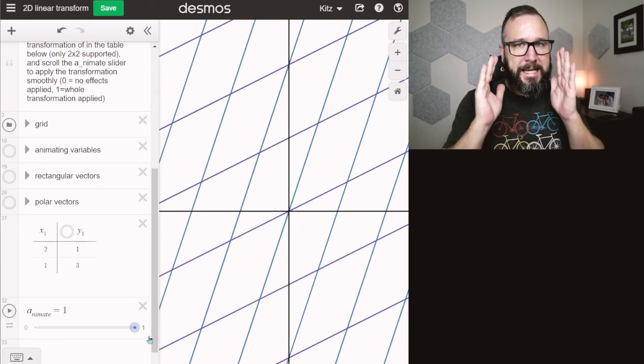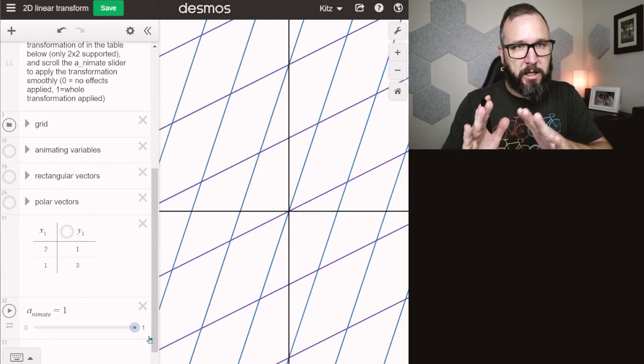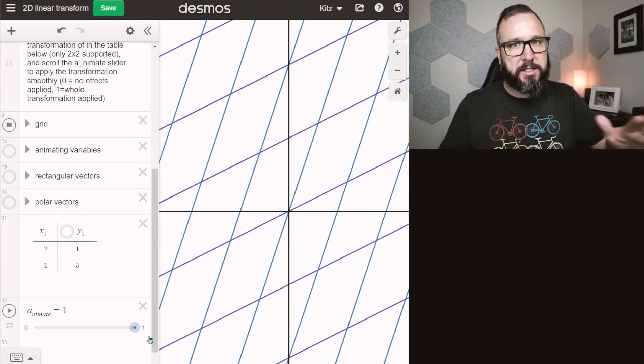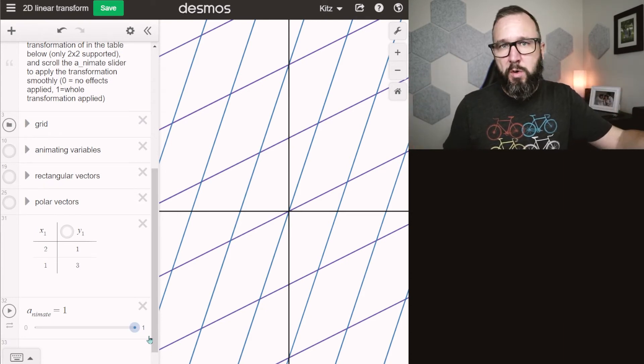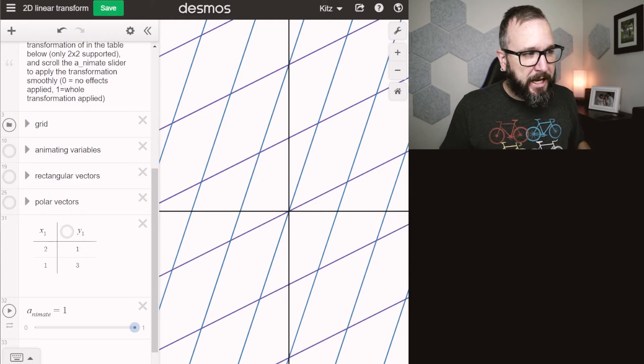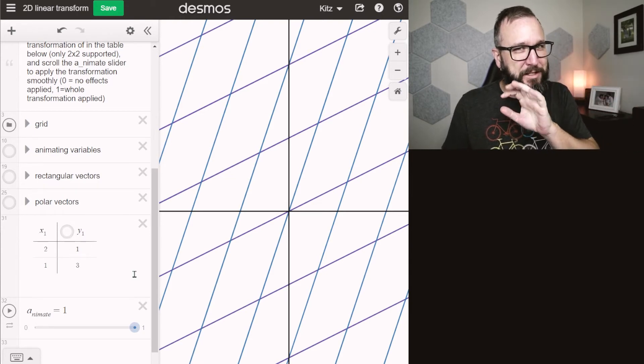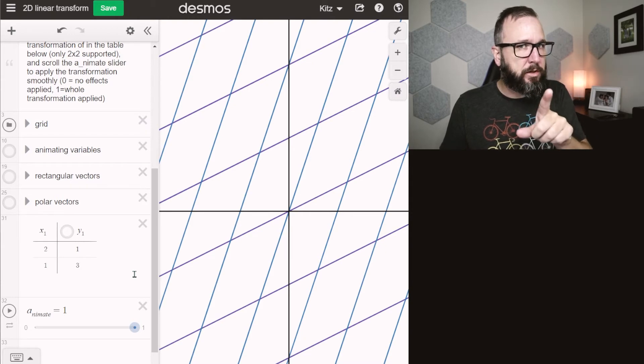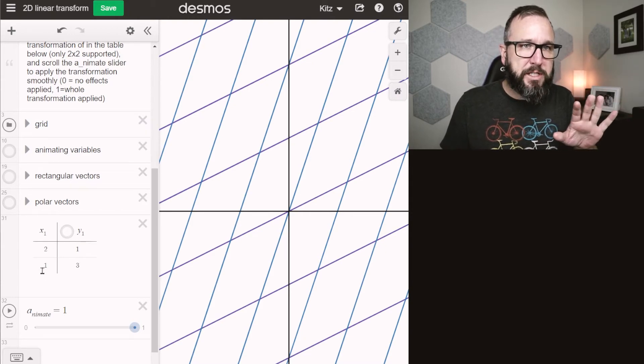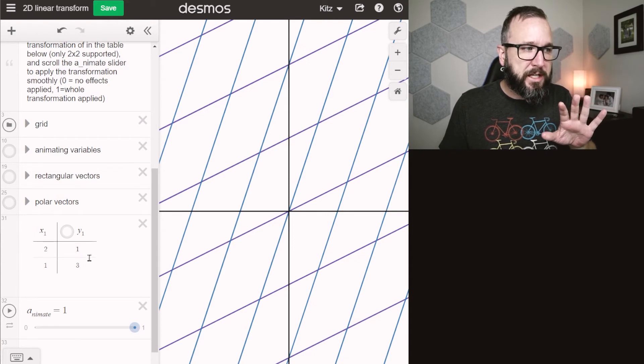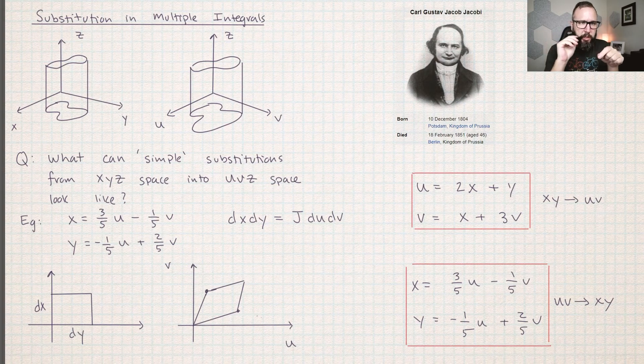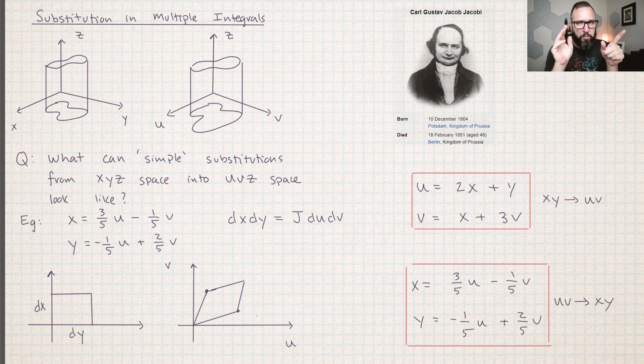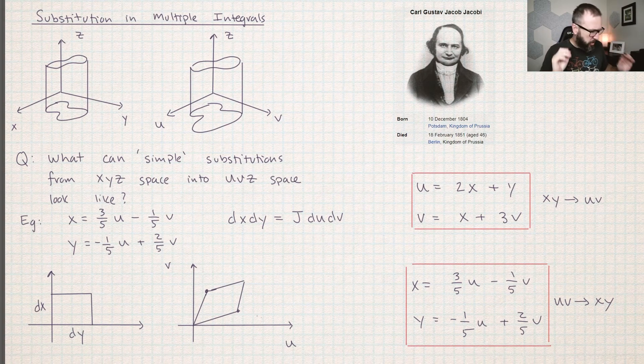So I cannot oversell the importance of this concept in your future math study. So look, if you got a minute, just go on this Desmos page and just start plugging in numbers and see what kind of different things can come out of this. There's a lot of really interesting learning that can happen if you just explore what happens if you put numbers into this little matrix right here. The easiest way to understand what a transformation is doing is to plug in 1,0 and 0,1. So let's do that now.